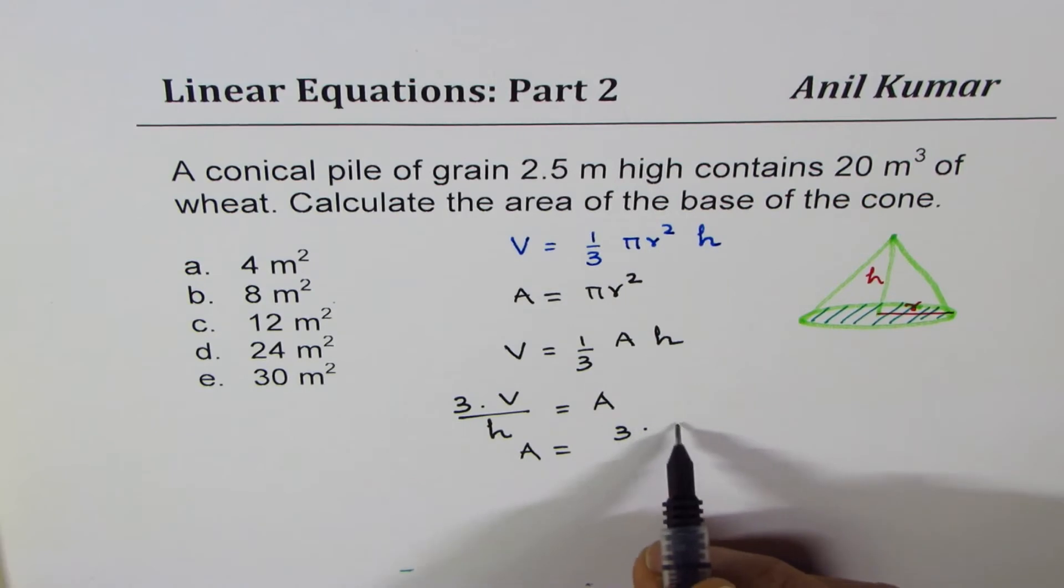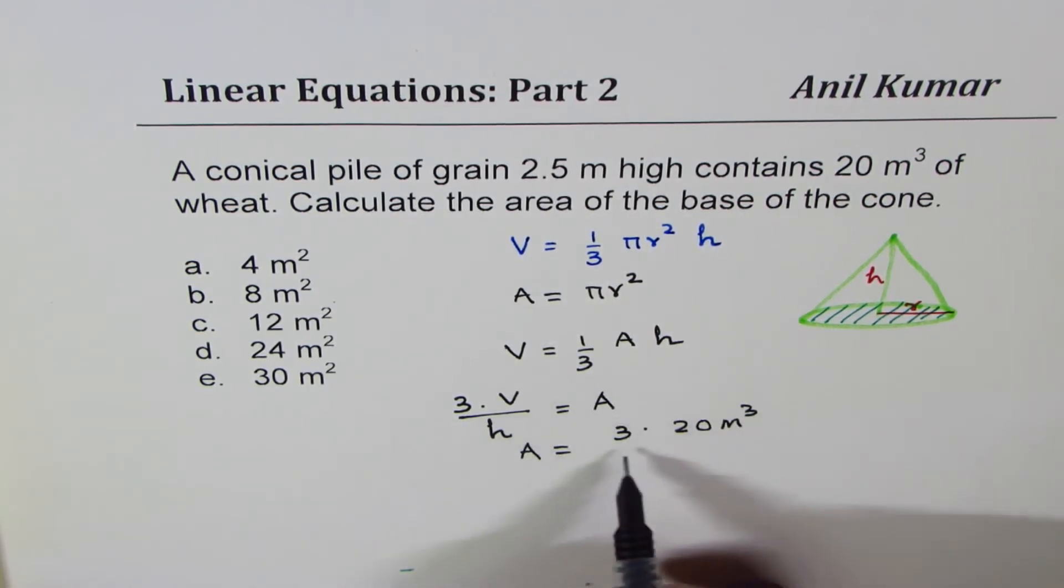3 times 20 cubic meters divided by the height, which is 2.5 meters.